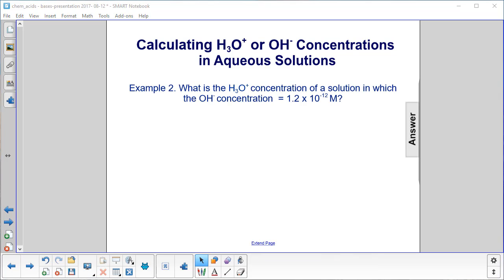Please work another example. This time we have the hydronium concentration of a solution in which the hydroxide concentration is 1.2 times 10 to the minus 12th. Find the hydronium. So please work that, pause the video if needed, and when you're ready, come on back.